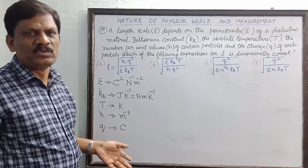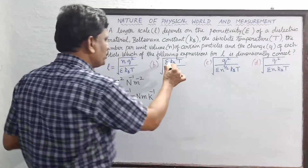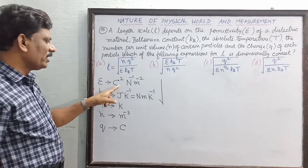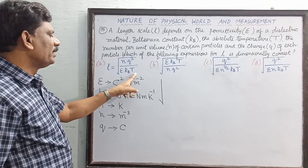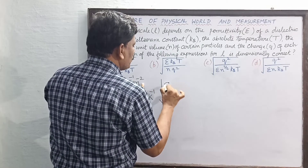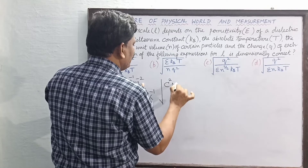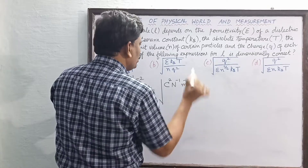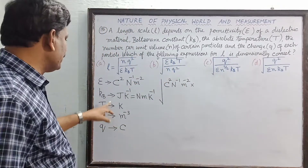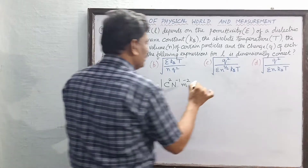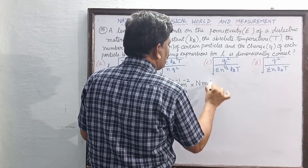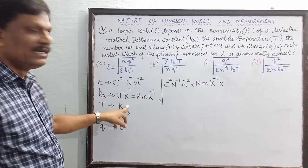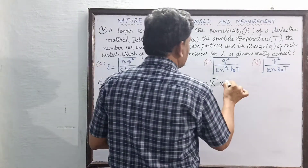Now substituting units into Option B — square root of [epsilon × KB × T] in the numerator divided by [n × q²]. For epsilon: C²·N⁻¹·m⁻², for KB: N·m·K⁻¹, for temperature T: K. So the numerator inside the square root is C²·N⁻¹·m⁻² × N·m·K⁻¹ × K.